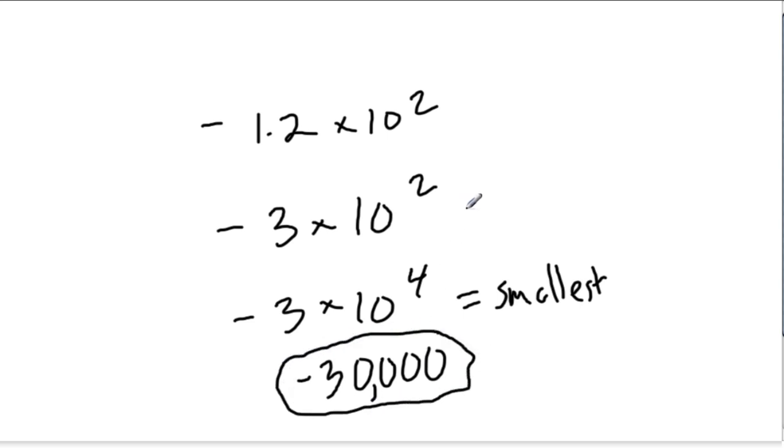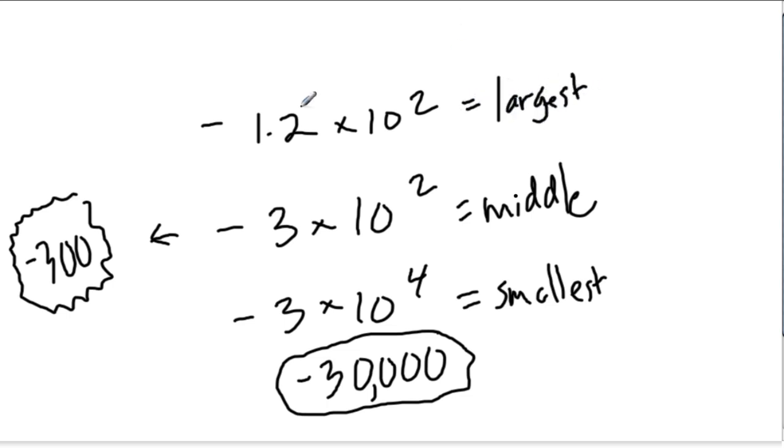And this number here, this is kind of the middle number. And if we wrote it in standard notation, we get negative 3 times 10 to the second, two zeros, we get negative 300. Now, this number is actually the largest. And even though the coefficient is the smallest, the coefficient is the smallest, because here the exponents are equal, but the coefficient is smaller. So it's 1.2 times 10 to the second, move the decimal point twice. Negative 120 is less negative than negative 300. It is the largest number.